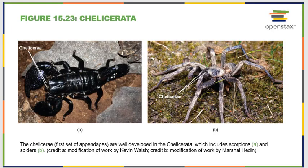We can also look at the Chelicerata, which includes our scorpions, spiders, and animals of that nature. They get their name from their specialized mouthparts. Some mouthparts can inject venom, while others are simply little food shovels. Animals in this class use these specialized mouthparts to help push food into their mouths, making them more effective eaters.